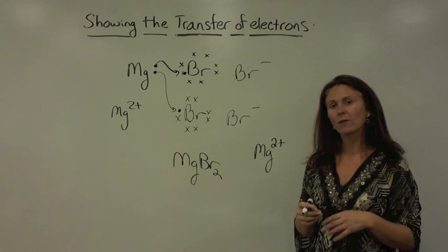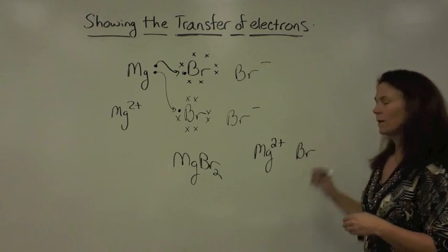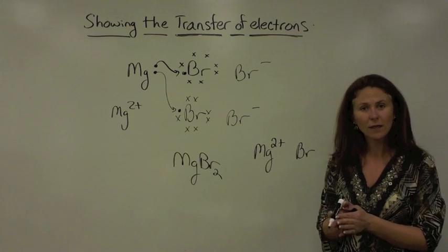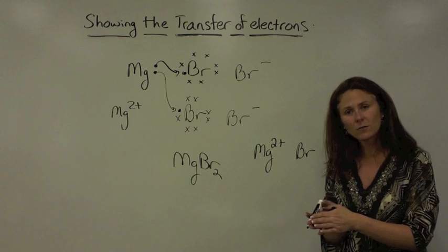So, when you write that charge down, and if it's going to combine with bromine, looking on the periodic chart, you know bromine is in group 7A, and you should know that bromine will always react forming a minus one charge.